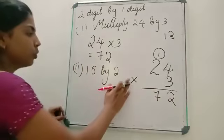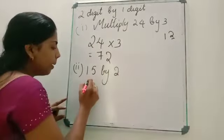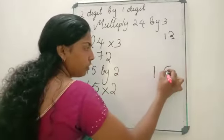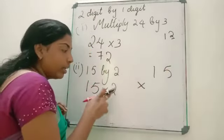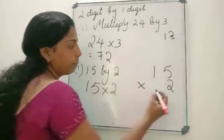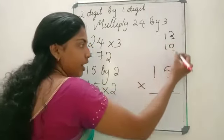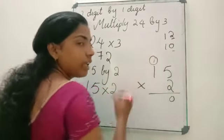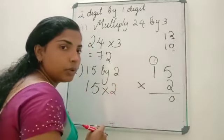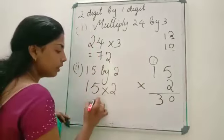Let us do one more question: 15 by 2. How can we do this? Multiply 15 by 2 means 15 into 2. Rewrite the question — write 15 first, then 2 in the 1's place below it. Now 2 into 5 is 10, so write 0 here and give 1 as carryover to the next place. Then 2 into 1 is 2, plus carryover 1, that is 3. So 15 into 2 is 30.